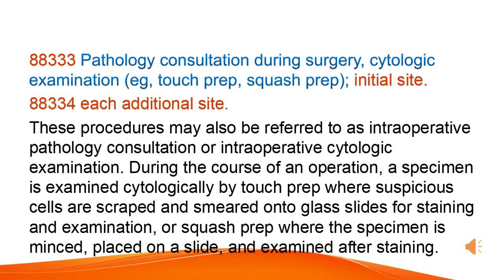Pathology consultation during surgery, cytologic examination, e.g., touch prep, squash prep, initial site. Each additional site. These procedures may also be referred to as intraoperative pathology consultation or intraoperative cytologic examination. During the course of an operation, a specimen is examined cytologically by touch prep, where suspicious cells are scraped and smeared onto glass slides for staining and examination, or squash prep, where the specimen is minced, placed on a slide, and examined after staining.